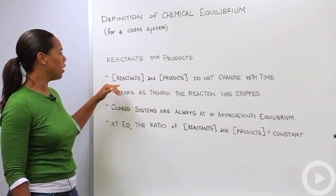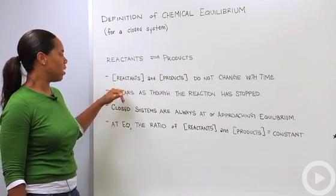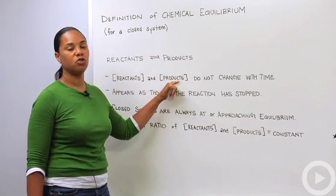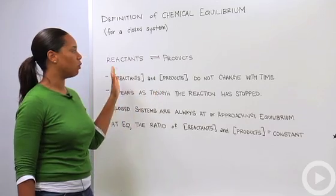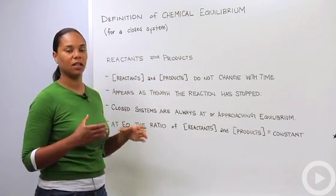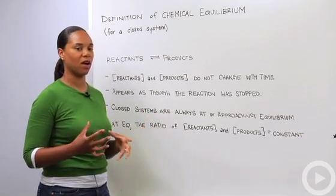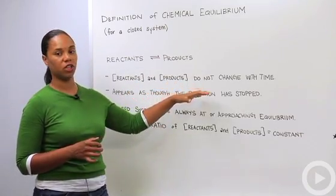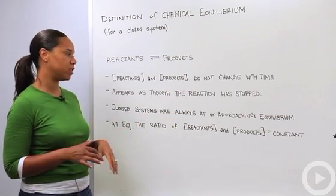A few important points about chemical equilibrium are that the concentration of the reactants and the concentration of the products do not change with time. When we're saying that the forward reaction is equal to the backwards reaction we're not saying that the concentrations of reactants and products are necessarily equal but that the concentrations don't change with time once they reach equilibrium.